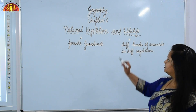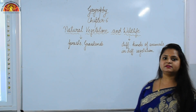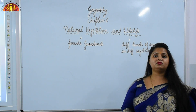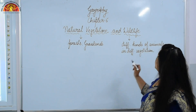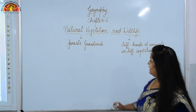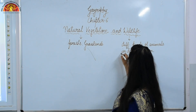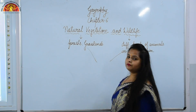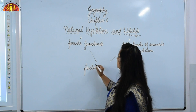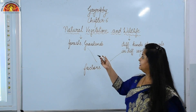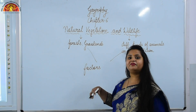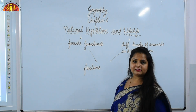So we are going to read about these two topics in this chapter. These forests, grasslands, shrubs, and different kinds of animals found in different vegetation all depend on basic factors. Why there are different types like forests and grasslands? And in different vegetation, different animals are found. Why such kind of difference is there?